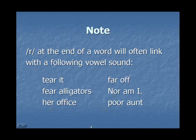Note: R at the end of a word will often link with the following vowel sound. For example, look at the first phrase: tear it. In normal speech, to speak smoothly, we connect our words. The R will lead into the next word which begins with a vowel sound. We don't say 'tear it' separately, but 'tear it' linked. Try the linking with the other phrases.